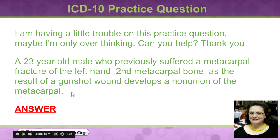Your phalanges are your fingers. The long bones that are between your wrist and that first knuckle in your hand — those long bones — that's the metacarpals. So obviously this guy has an injury. He had a gunshot wound in the hand, and it developed a nonunion, meaning the bones didn't stay lined up.